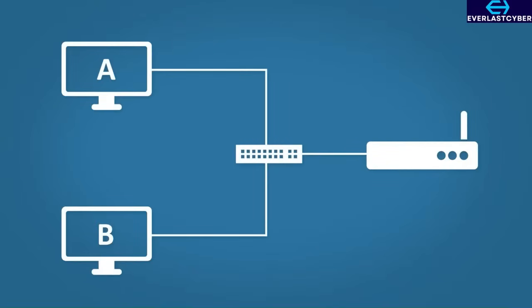Let's see an example. Here's our network. We have two PCs, a switch, and a router. For our computers to work over the network, they need an IP address — not just any IP address. That address has to be unique on the network, otherwise data goes to host A when it should actually be going to host B, and host A doesn't know what is going on and the whole thing becomes a mess.